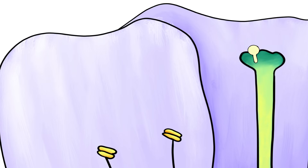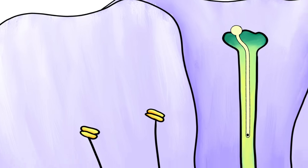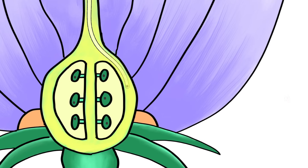When a pollen grain lands on the stigma, it forms a pollen tube down the style of the flower. The pollen grain's nucleus travels down the pollen tube as it grows towards the ovary and the ovule.